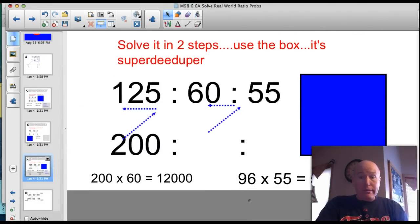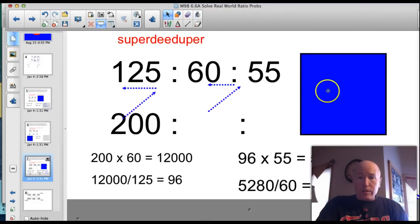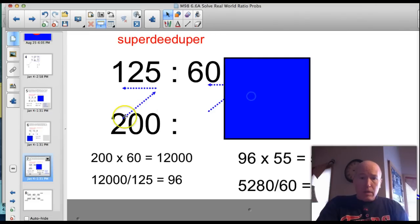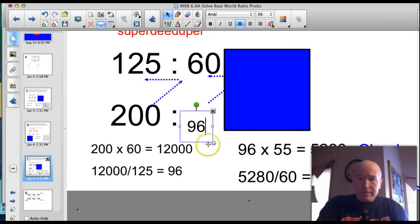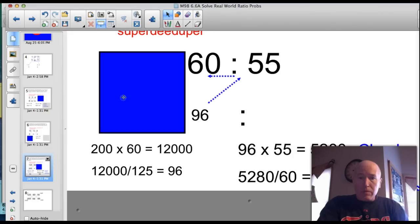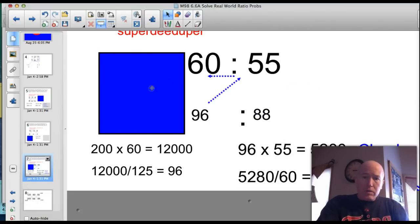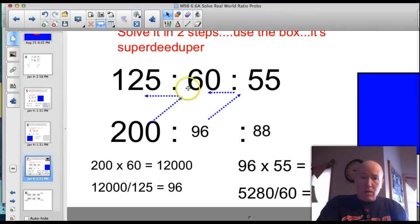Let's see how you did. This is the way I set it up. Just like I did before. So 125. I'm going to solve this guy first. So 200 times 60 is 12,000. And then that would be that 12,000 divided by 125 down here would be 96. So I could take and stick 96 up here. And then I can take a look at the second part of the ratio. 60 to 55, 96 to something. So then 96 times 55 is 5,280. 5,280 divided by 60 would be 88. If this was 125 hits to 60 runs to 55 RBIs, if he got 200 hits and they follow the same ratio, he'd have 96 runs scored and 88 RBIs.